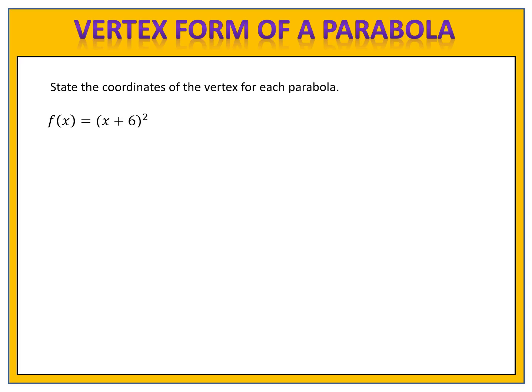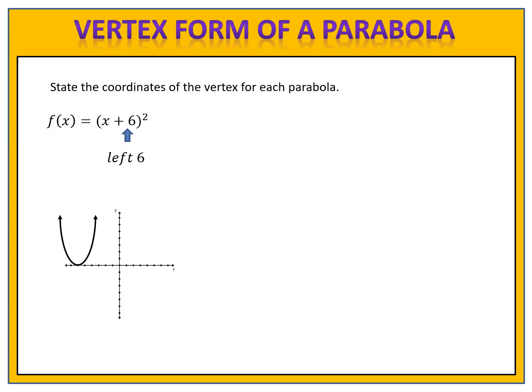How about this one? f of x equals x plus 6 squared. We notice that we have plus 6 inside the parentheses. That means our parabola will shift 6 units to the left. The coordinates of the vertex are (-6, 0).